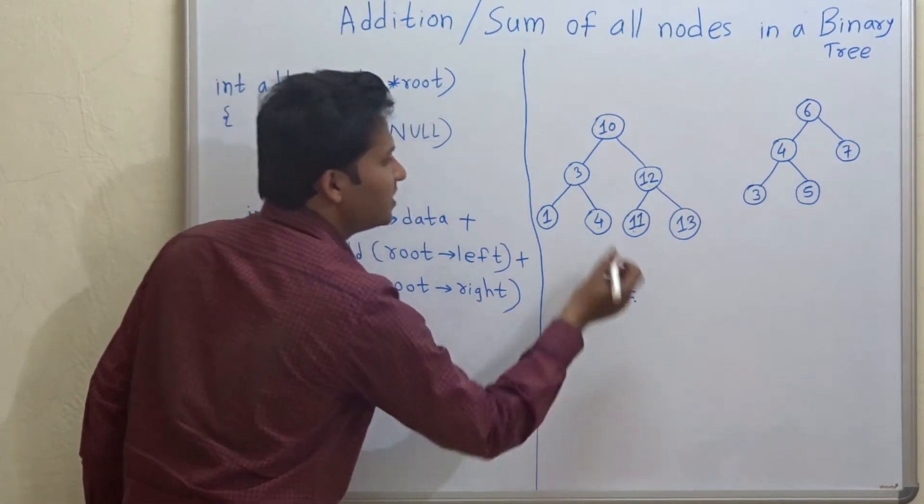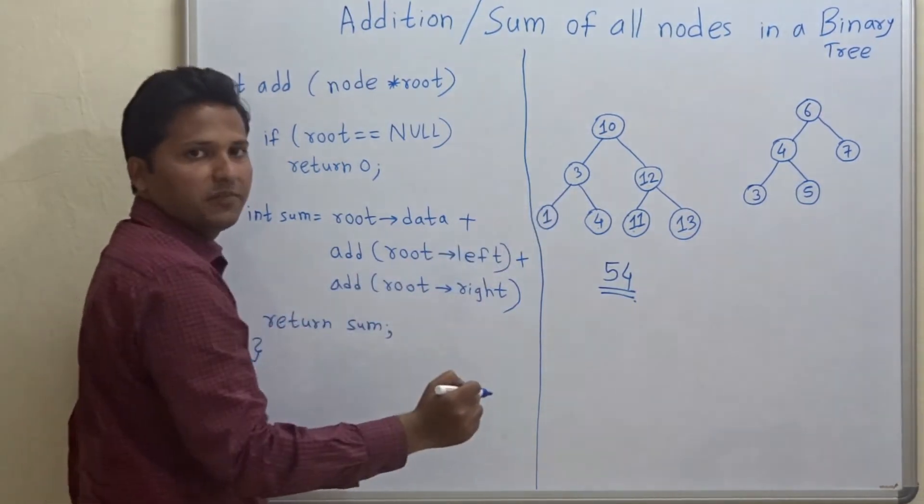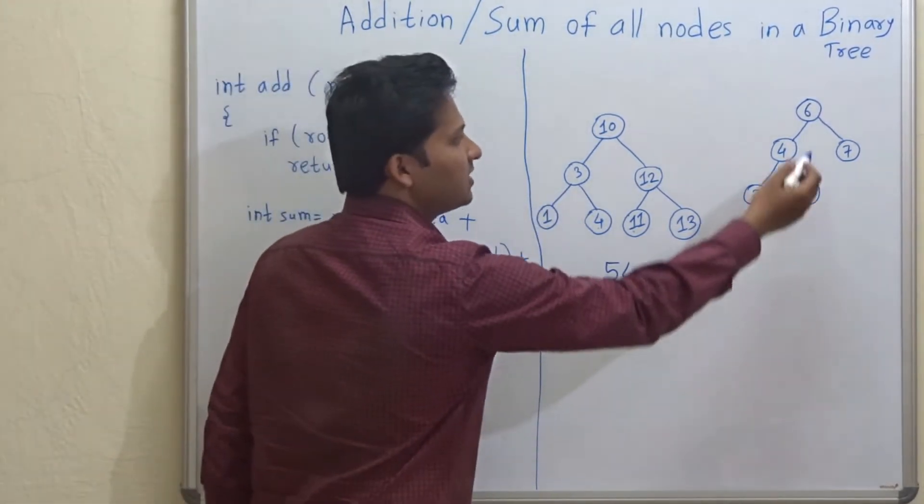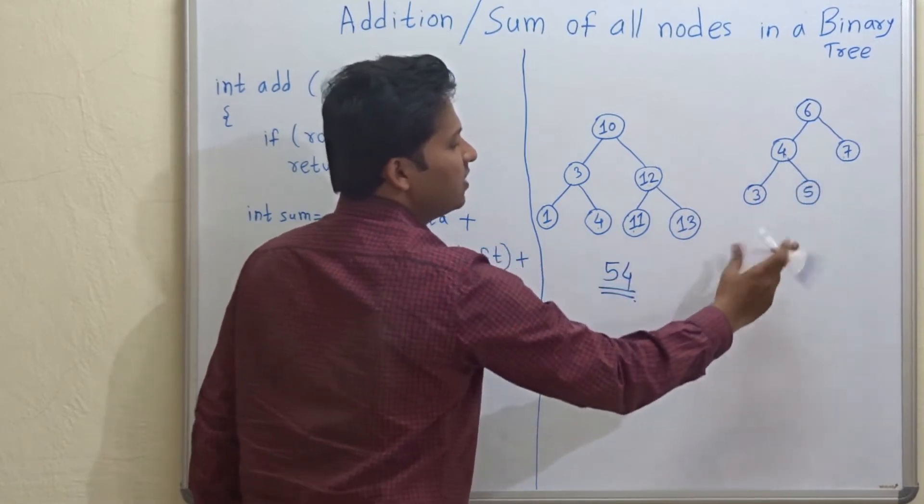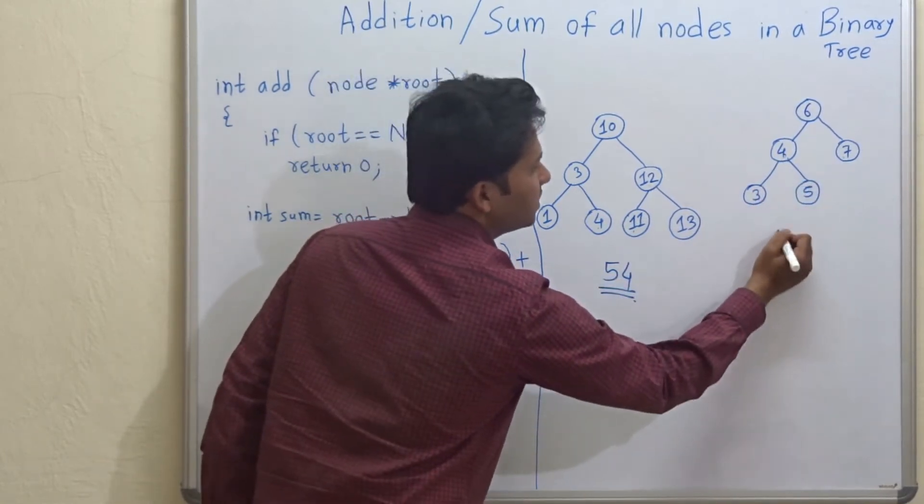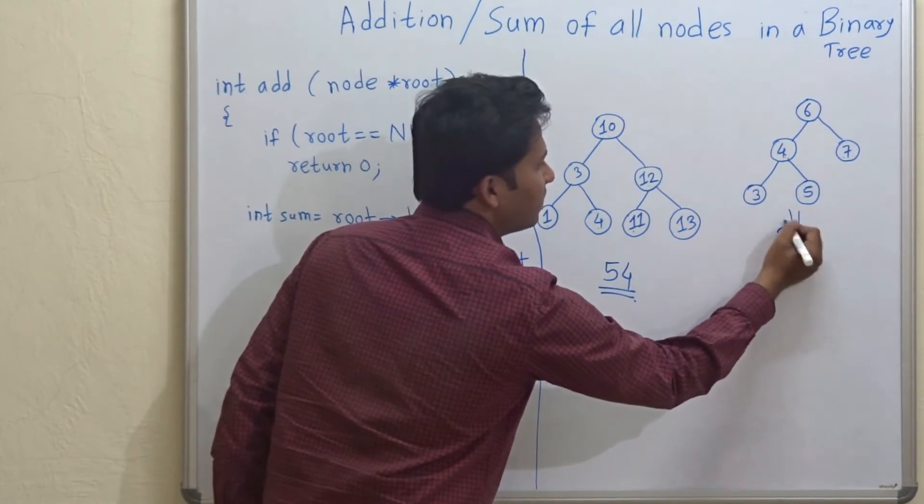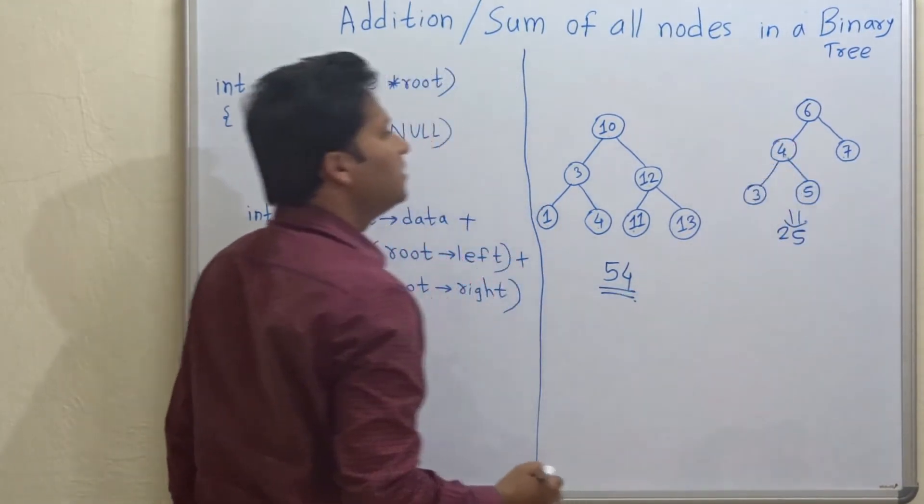So this is the addition of all nodes in this binary tree and this is the second example. 6 plus 4 is 10, plus 7 is 17, plus 3 is 20, 20 plus 5 is 25. So 25 is the addition of all nodes in this binary tree.